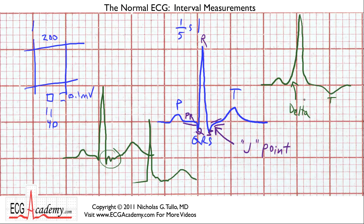What measurements are important? The R-to-R interval gives us our heart rate, as discussed in the last chapter. The intervals we measure on a QRS complex include: the PR interval, from the beginning of the P wave to the beginning of the QRS complex, which tells us about the AV conduction system; the QRS duration, from the beginning to the end of the QRS complex; and the QT interval, from the beginning of the QRS complex to the very end of the T wave where it returns to baseline.